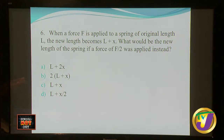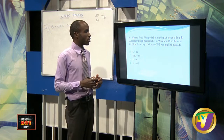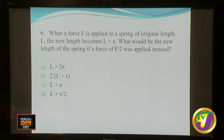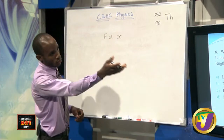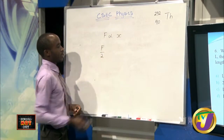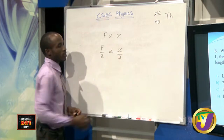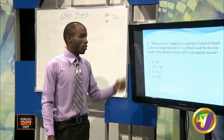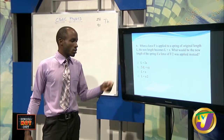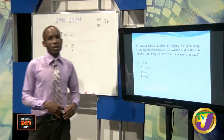When a force is applied to a spring of original length L, the new length becomes L plus X, where X is the extension. What would be the new length if force F divided by 2 was applied instead? This comes from Hooke's law, which says force is proportional to X. So if you have force F producing extension X, then if you make the force half as much, the extension is proportionally half as much. You should have L plus X over 2. So A, B, and C are out — it's close but out. The answer is D.